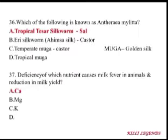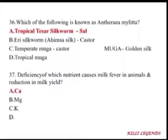A breed of buffalo having sickle-shaped horns turned downward and backward, with brown or black skin color, found in the Gujarat region, is the Surti buffalo. Murrah and Toda buffalo breeds are also notable — Toda buffalo is found in Tamil Nadu, especially in the Nilgiri Hills.